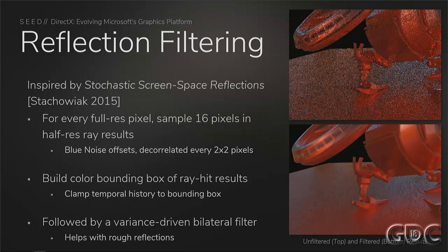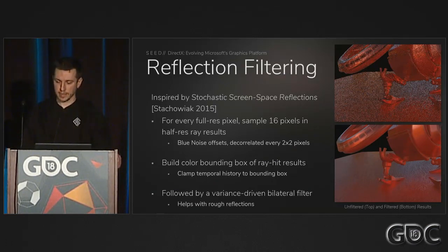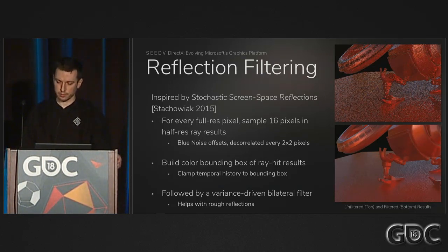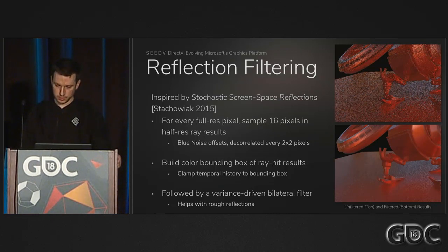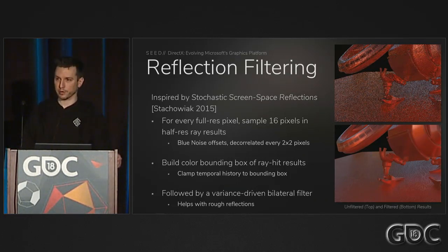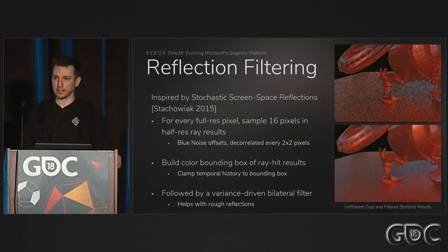Once we've generated the half-resolution images with hit results, we reuse them to synthesize the full-resolution output. For every pixel in the full-resolution output, we use 16 samples from the half-res data. Neighboring half-res pixels provide useful information, but we need to make sure it's not obvious that we reuse ray-traced results between them. We use blue noise to break it up and ensure all pixels in a two-by-two quad have different results. This provides the spatial part of the filter, coupled with a temporal component similar to TAA. Finally, we have a second-stage, larger variance-driven bilateral filter to clean up remaining noise, which really helps with rougher reflections.